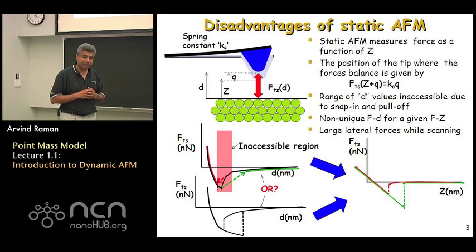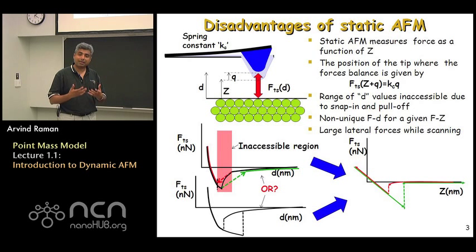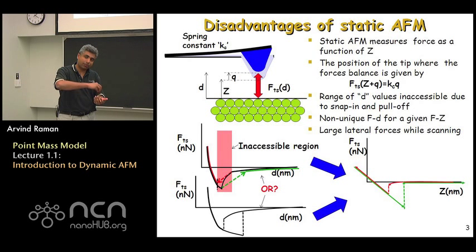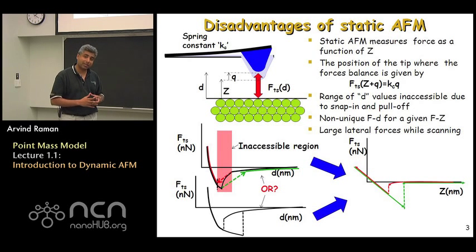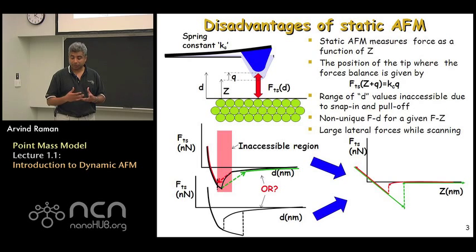A third important limitation of static AFM is that contact mode imaging applies a constant force and scans the surface. However, if you have weakly bonded samples on the surface, the lateral forces applied by contact mode can broom or push those samples aside. Because of all these reasons, dynamic atomic force microscopy was historically developed.